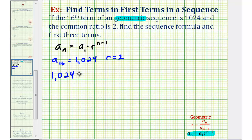So we'd have 1024 equals a sub one times r, which we know is two, raised to the power of n minus one, where again n is equal to 16, so we have 16 minus one as our exponent.